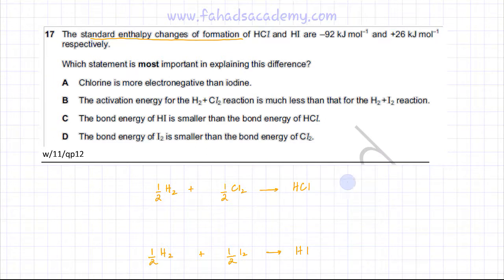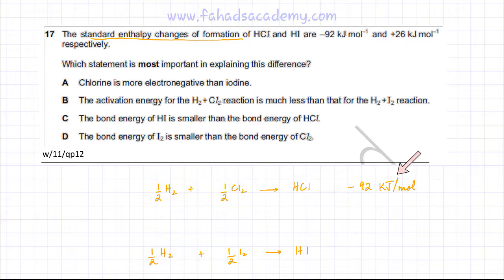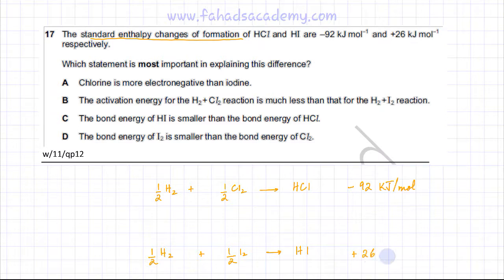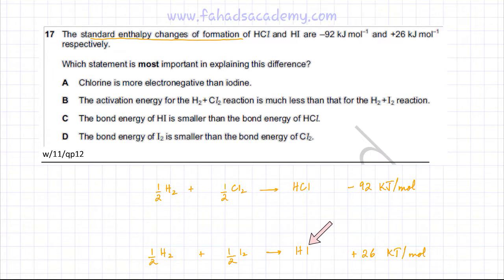For HCl, the enthalpy of formation is minus 92 kJ per mole, which is exothermic — more energy is released during bond formation than is absorbed during bond breaking. For HI, it's plus 26 kJ per mole, which means it's overall endothermic — more energy is absorbed during bond breaking than is released during bond formation.